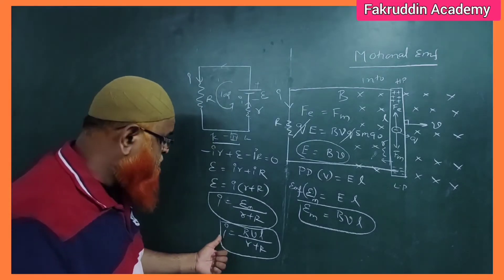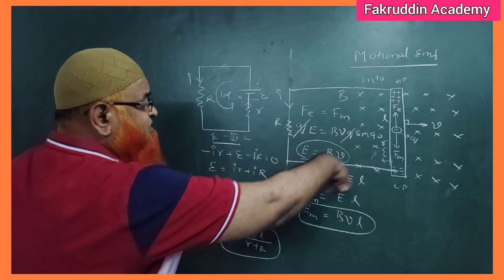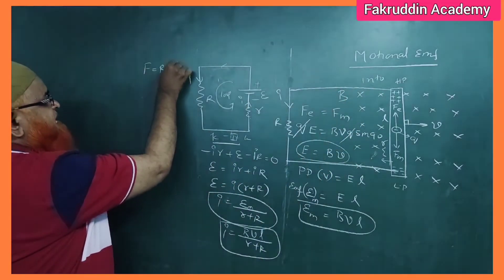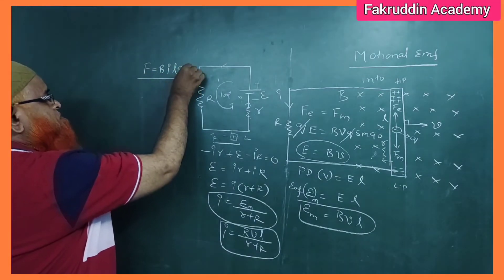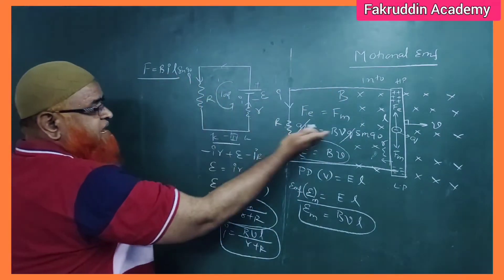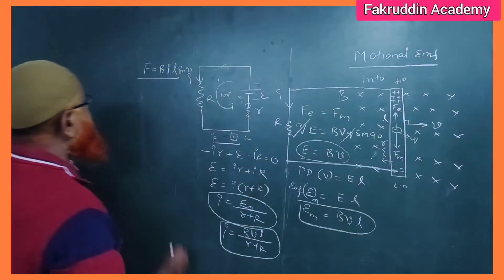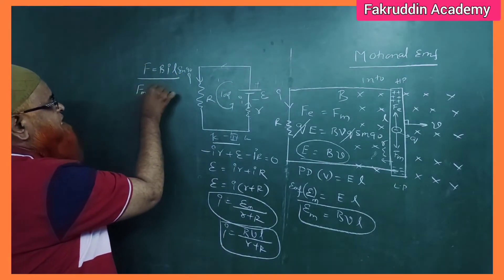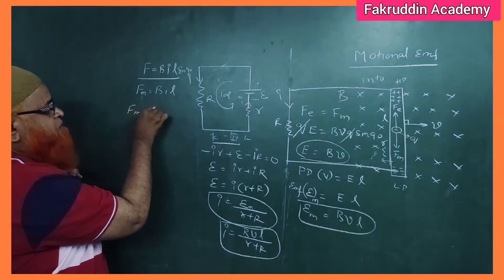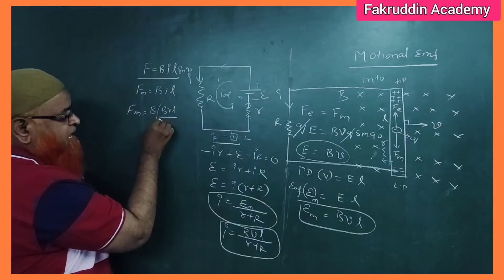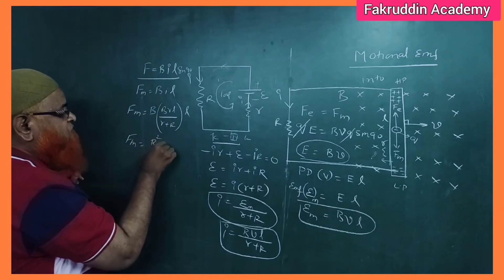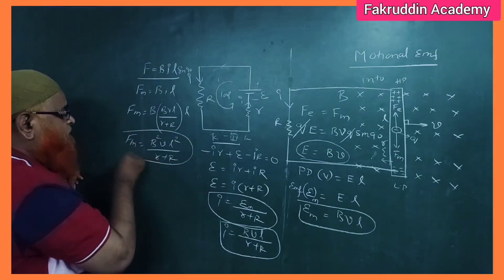Once you have the current, you can find the force developed. The force formula is F = B·I·L·sin90°. Substituting I = BVL/(r + R), we get the magnetic force: FM = B²VL² / (r + R). This is the formula for the force developed on the rod due to its motion in the magnetic field.